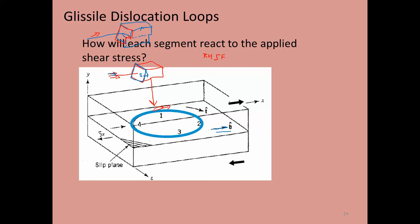Now I apply a shear this way. The whole top part of this volume wants to be displaced to the right relative to the bottom, and that happens by this dislocation line moving back and to the left. That's the sequence — you'd do this at each position: one, two, three, four.